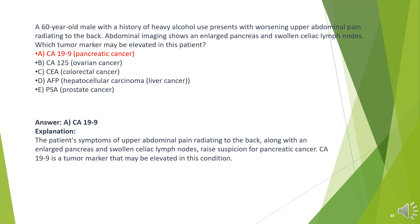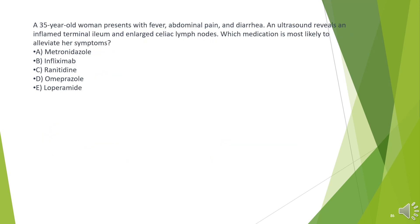The answer is A. CA-19-9. The patient's symptoms of upper abdominal pain radiating to the back, along with an enlarged pancreas and swollen celiac lymph nodes, raise suspicion for pancreatic cancer. CA-19-9 is a tumor marker that may be elevated in this condition.